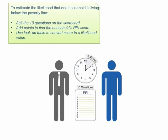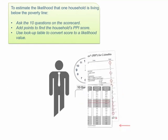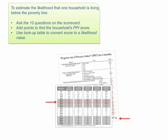This usually takes under 10 minutes. The household receives a score based on the answers to the questions. The PPI lookup table is then used to convert the score to the likelihood that the household is living below a variety of poverty lines. This likelihood value is expressed as a percent. In this example, this household has a 42.6% likelihood of living below the $2.50 per day poverty line.